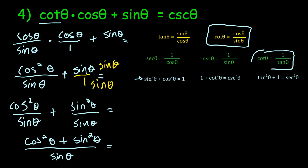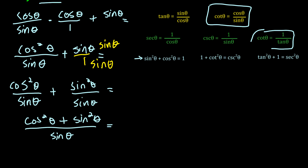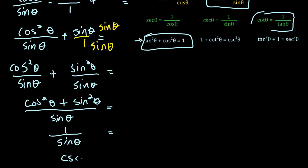That gives cosine squared theta plus sine squared theta, all over sine theta. It looks messy but we're really close. For the rest of your life, whenever you see cosine squared theta plus sine squared theta — or flipped around — you should automatically think that equals one. So the numerator becomes one, and one over sine theta is cosecant theta — which is exactly what we were looking for! Four examples done. The more you practice, the better you'll get at proving trig identities.